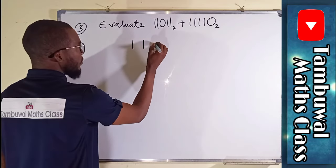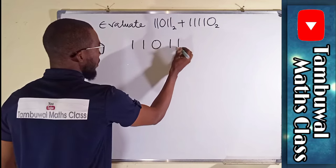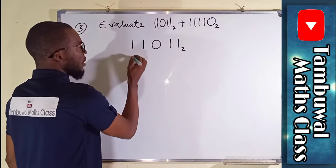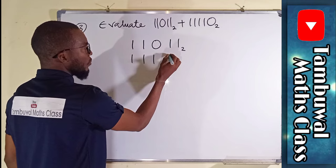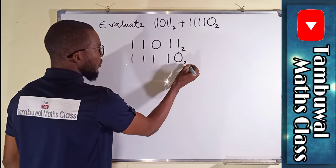We have 1, 1, 0, 1, 1, this is base two. And we have 1, 1, 1, 1, 0, also in base two.